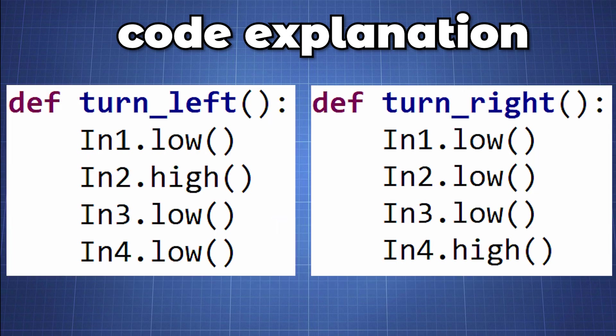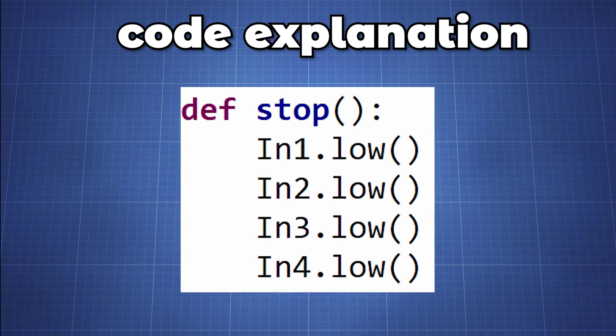In the following two functions turn_right and turn_left we will set one motor off by setting both its input to low and turn the other one either to the right or left depending on the function. We define a function stop to stop all the motors and set all the input pins to low but you can also set this to high.